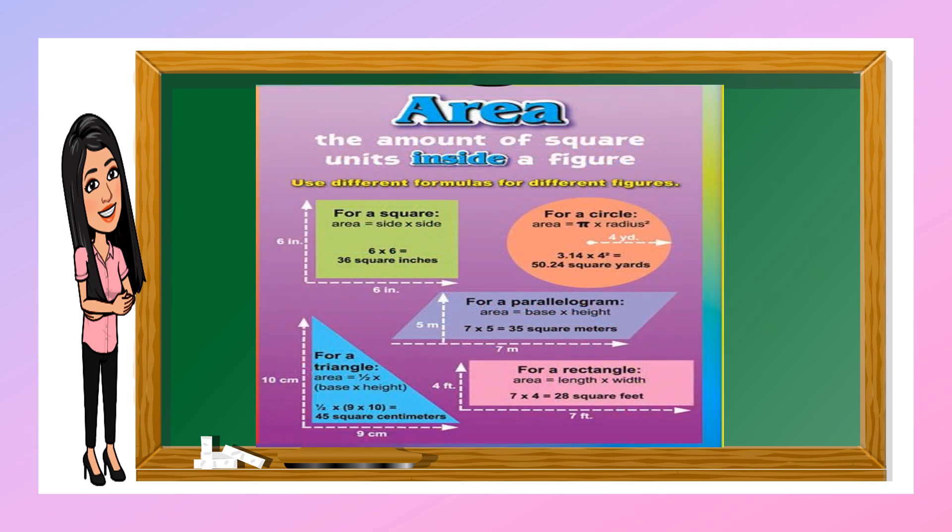This time we will talk about the area — the amount of square units inside a figure. Use different formulas for different figures. A square has a formula of side times side (s × s). A parallelogram uses base times height. A triangle uses one-half times base times height. And for a rectangle, we have length times width.